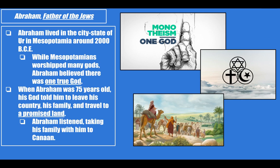Abraham is known as the father of the Jews. He lived in the city-state of Ur in Mesopotamia around 2000 BCE — about 4,021 years ago. While the Mesopotamians worshipped many gods and were polytheistic, Abraham believed there was one true God. He was monotheistic, meaning he only believed in one God. When Abraham was 75 years old, it says in the Hebrew Bible that his God told him to leave his country, his family, and travel to a promised land. Abraham listened, taking his family with him to Canaan.